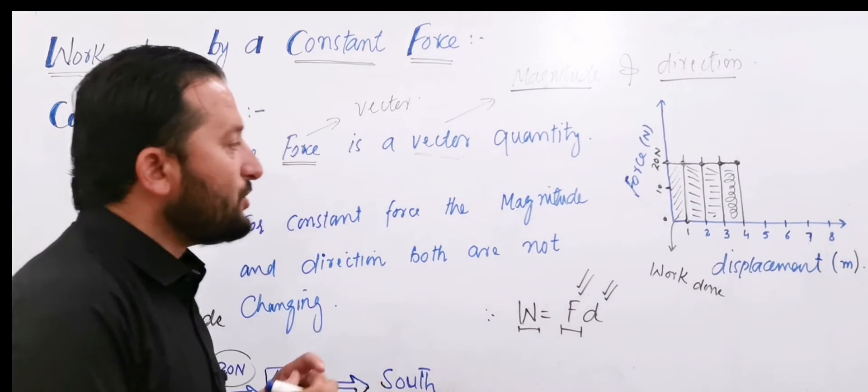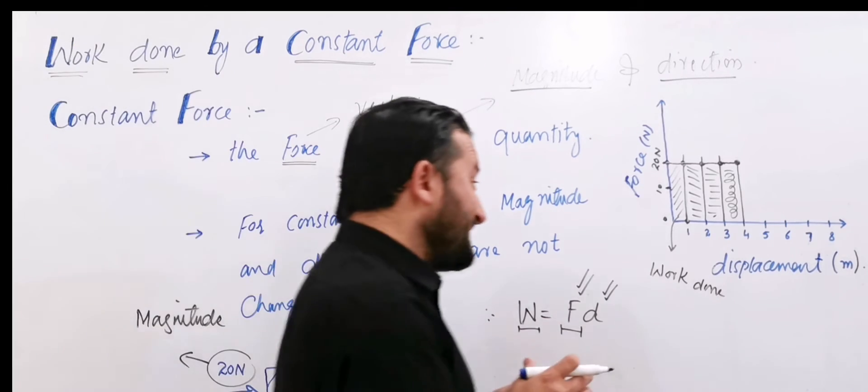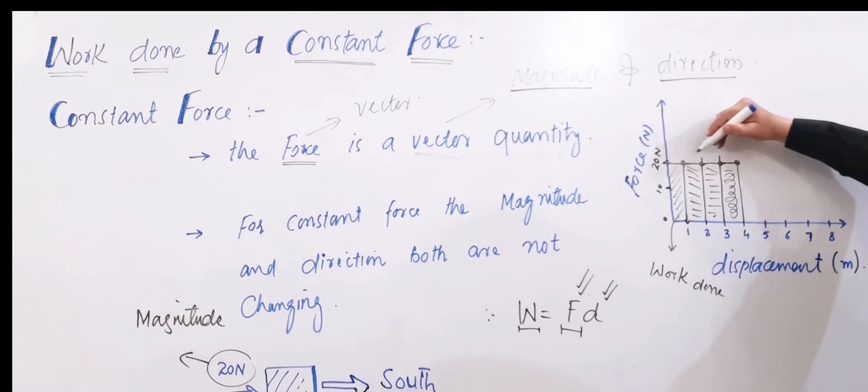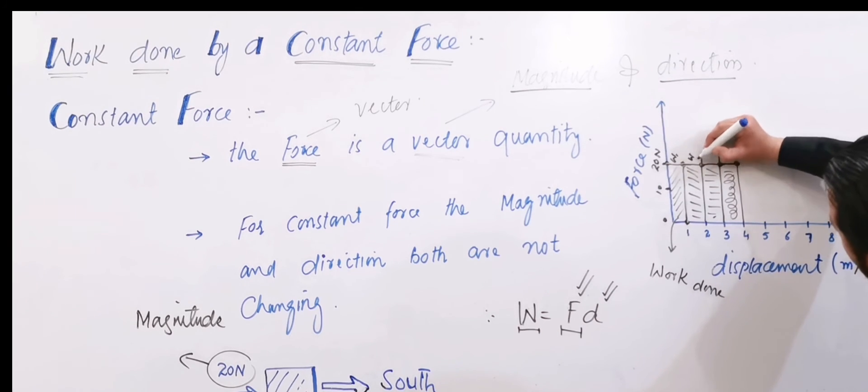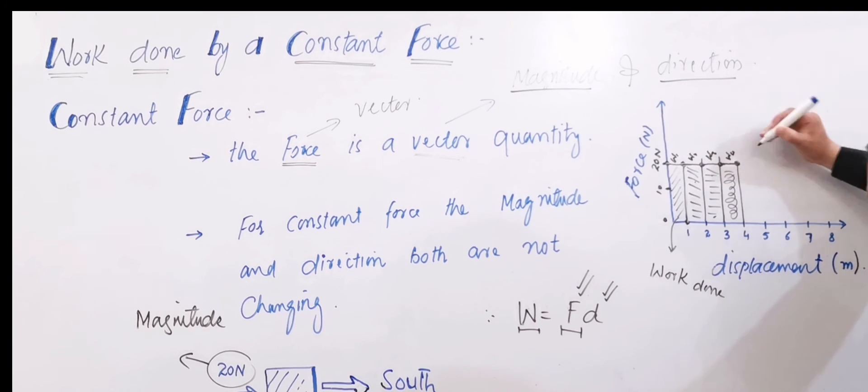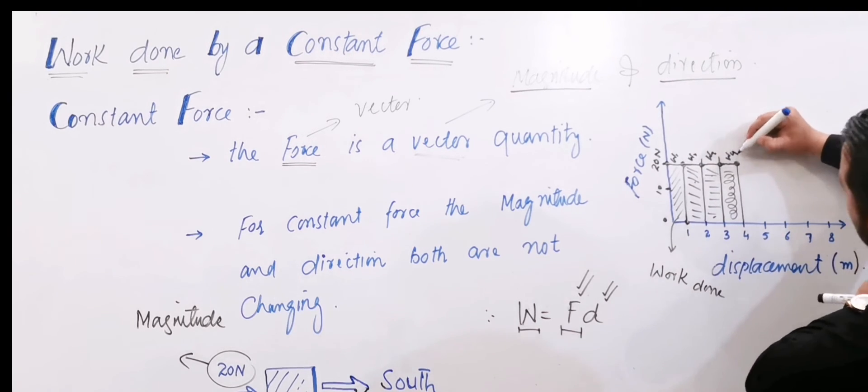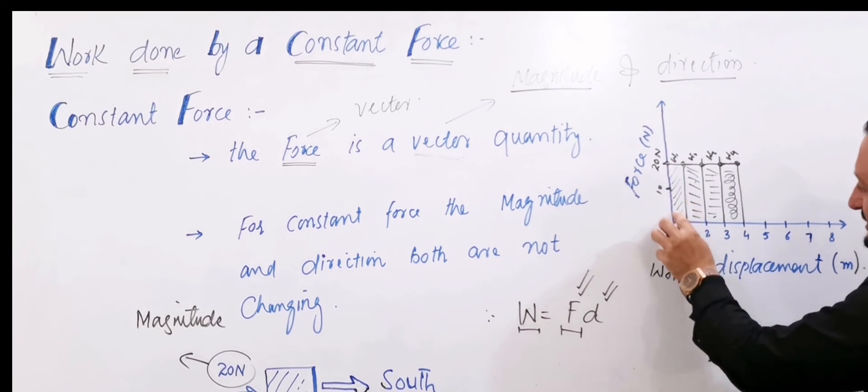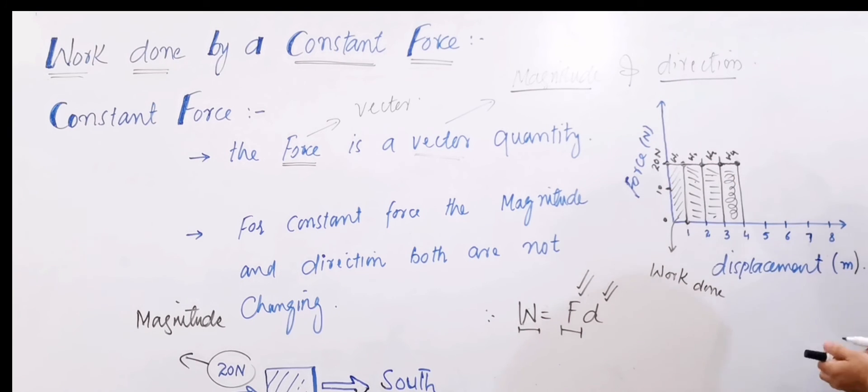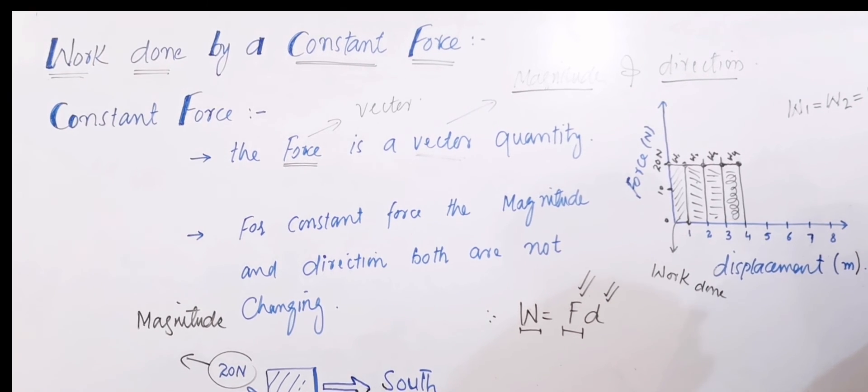You see, in any interval, this is work done. Look - rectangles that you see, the total work of all these rectangles. Let's call this region W1, this W2, this region W3, this W4. The total work is the sum of these. The work equals W1 plus W2 plus W3 plus W4 and so on.